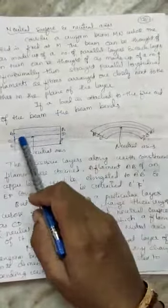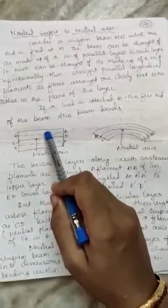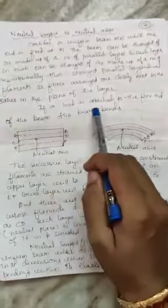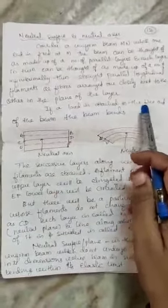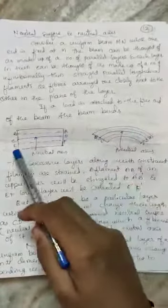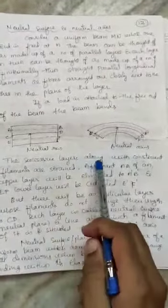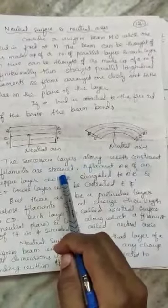The beam consists of a number of parallel layers, and each layer consists of a number of filaments. When the load is attached to the free end, the beam bends. This is the bending diagram shown here — ab is shown as a dash b dash, cd remains as cd, and ef is shown as e dash f dash.